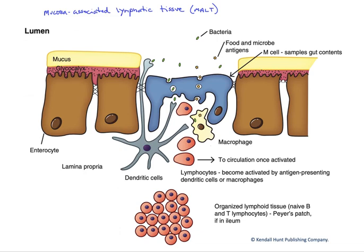In this figure, we'll look at mucosa-associated lymphatic tissue, or MALT. This is one layer of defense against the microbes that come in by the millions in the food we eat every day.